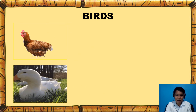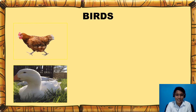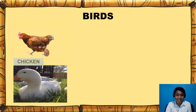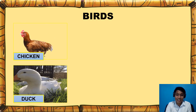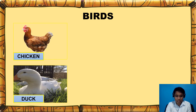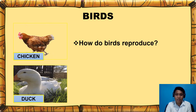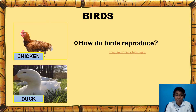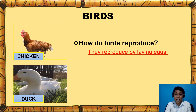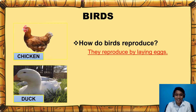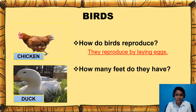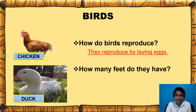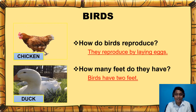How about these animals? Can you name them? That's a chicken and a duck. Now, based on the picture, how do birds reproduce? They reproduce by laying eggs. And how many feet do they have? Birds have two feet.